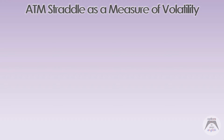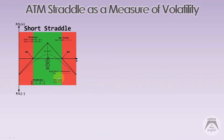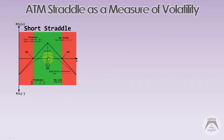Let's start with the short straddle strategy. It's a short put and a short call at the same strike price K, with break-evens on the upside and downside. The structure: short one at-the-money put at strike price K, short one at-the-money call at the same strike price. The max profit is the premium of the put plus the premium of the call. The max loss is undefined, and the break-evens are K plus max profit and K minus max profit.